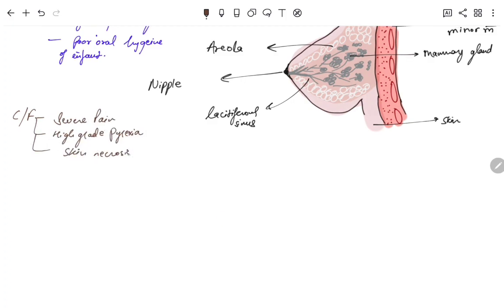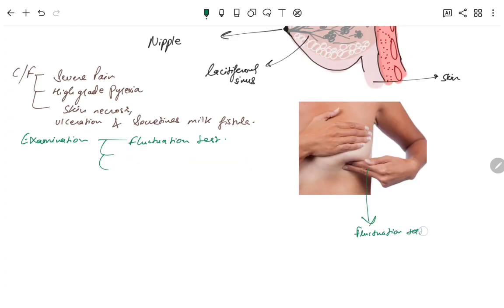Clinical features: severe pain, high-grade fever, skin necrosis, ulceration, and sometimes milk fistula. How do we do the examination? There is a fluctuation test using fingers and palms of the examiner.